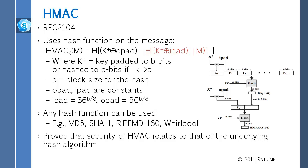The result of that second hash is called HMAC. So HMAC is not one algorithm — it could be any algorithm. If you use MD5 it is HMAC-MD5, if you use SHA-1 it is HMAC-SHA-1, if you use Whirlpool it is HMAC-Whirlpool. These are all different hash functions you can use with the HMAC structure.